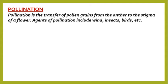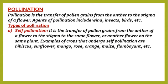There are some agents or elements that bring about pollination, which include wind, insects, birds, even humans and other mammals. Now let us look at the types of pollination. The types refer to the distance the pollen grains travel. We have self-pollination and cross-pollination.